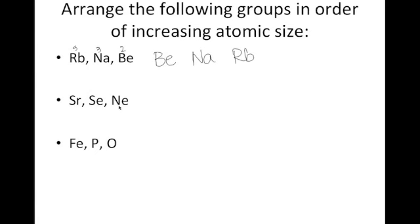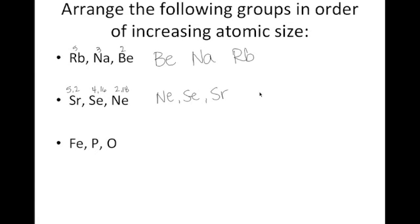Now looking at strontium, selenium, and neon: strontium is in period five, group two; selenium is in period four, group 16; and neon is in period two, group 18. So neon by far is the smallest, followed by selenium, and then the largest is strontium. A little trick: whichever element is closest to helium is going to be the smallest, and whichever is closest to francium is going to be the largest.